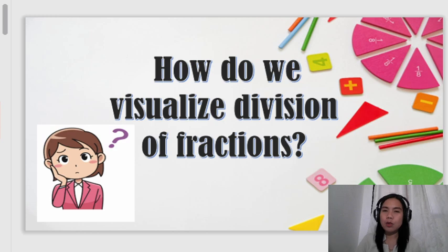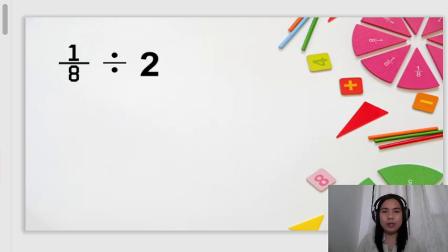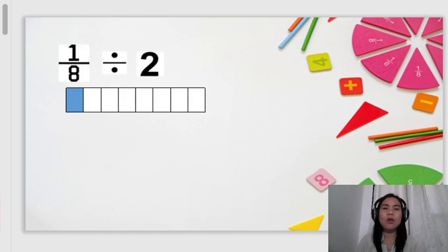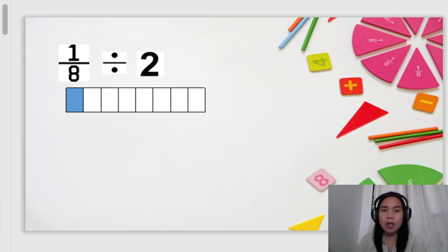How do we visualize division of fractions? Example: 1/8 divided by 2. So, to visualize the division of fraction, the first step is to visualize 1/8. So, this is 1/8 — it is divided into 8 equal parts, and the shaded part is just one, because that is our numerator.